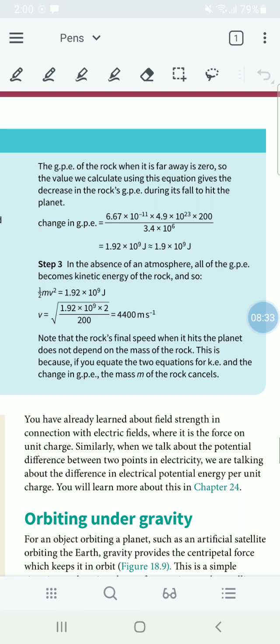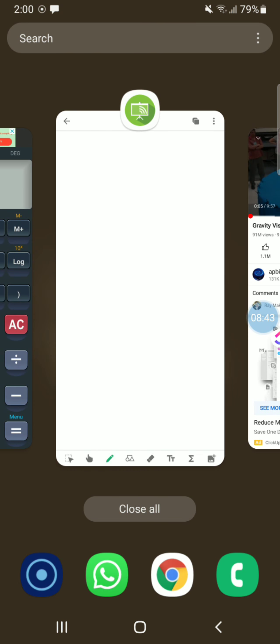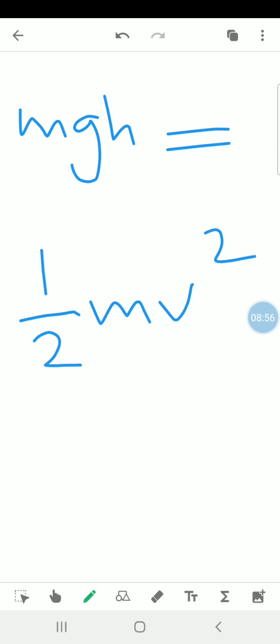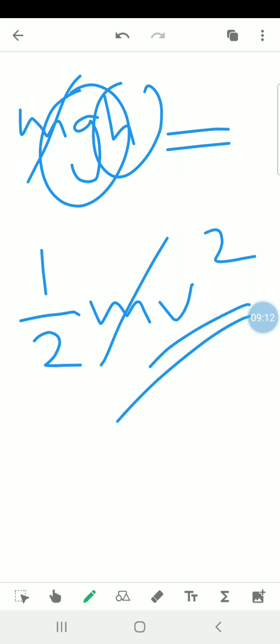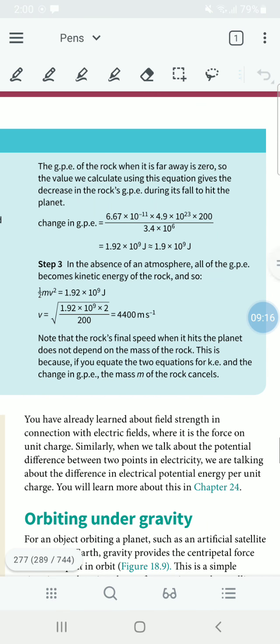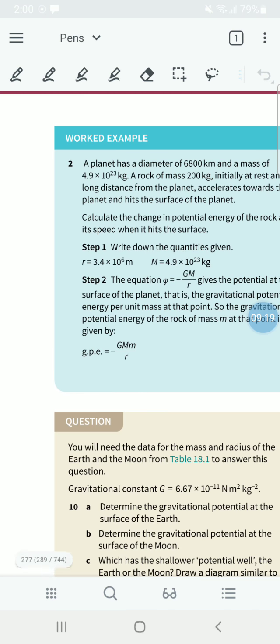So now the rock hits the surface at that speed. What are the things that is going to affect? Will the size matter or the mass matter? Let's try to figure that out. Half mv squared, the equation is going to be: mgh, that is the gravitational potential energy, is equal to half mv squared. Now in both sides you have m, m gets cancelled out. So the effect of mass is not there. It depends on height or the distance and gravity. That is what would decide the velocity at which it is going to hit.